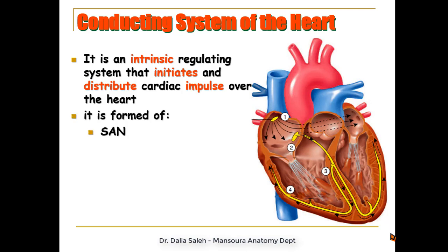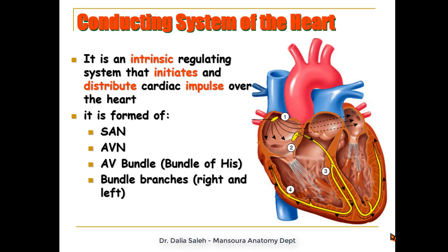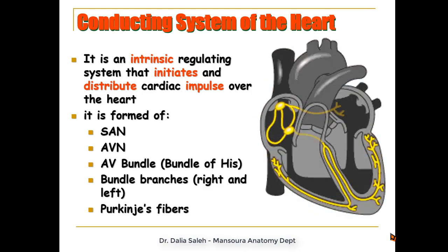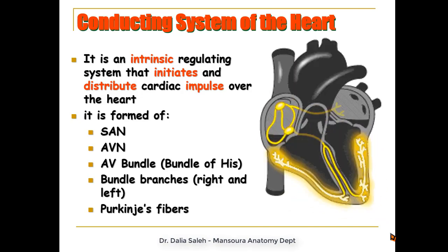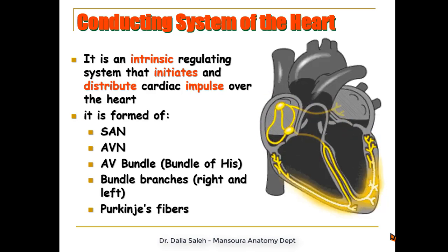This system is formed of a pacemaker called the sinoatrial node. The impulse spreads from there to the AV node or atrioventricular node, then to the AV bundle or atrioventricular bundle, also called the bundle of His. It then splits into the right bundle branch and left bundle branch, from which many fibers called Purkinje fibers spread into the walls of the ventricles. A simple animation shows how the impulse propagates from the SA node to the AV node, to the AV bundle, to the bundle branches, and then to the Purkinje fibers.